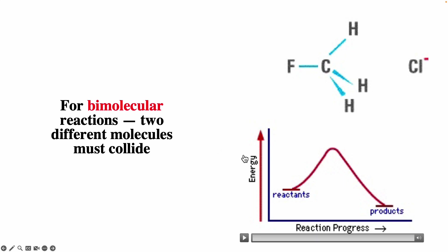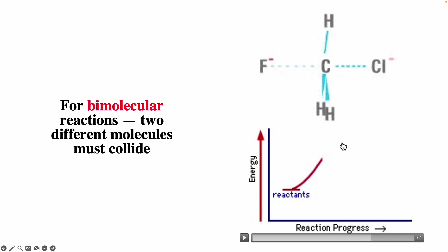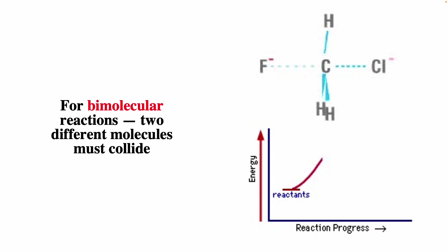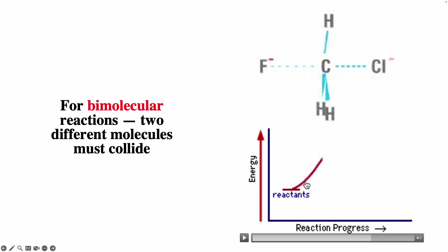The y-axis is energy, and on the x-axis we have reaction progress. Here are your reactants and here are your products. Here is your transition state — this is the highest energy point. Notice that in this case, it corresponds to carbon surrounded by five different atoms. We know that's not stable. Transition states are not stable, but they're basically the barrier that the reaction has to overcome to occur.